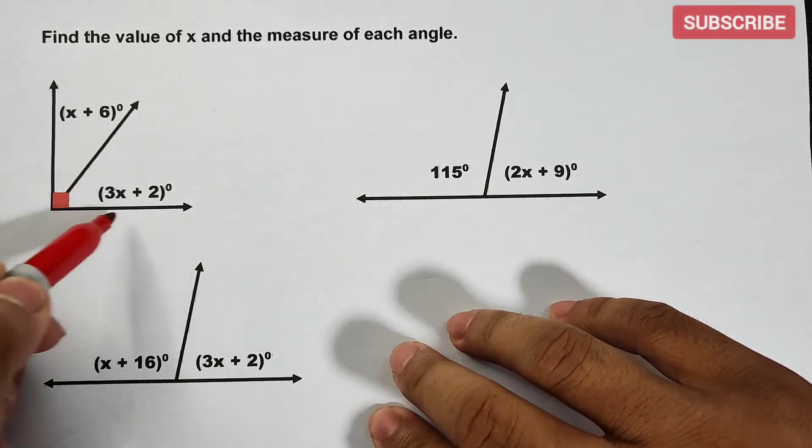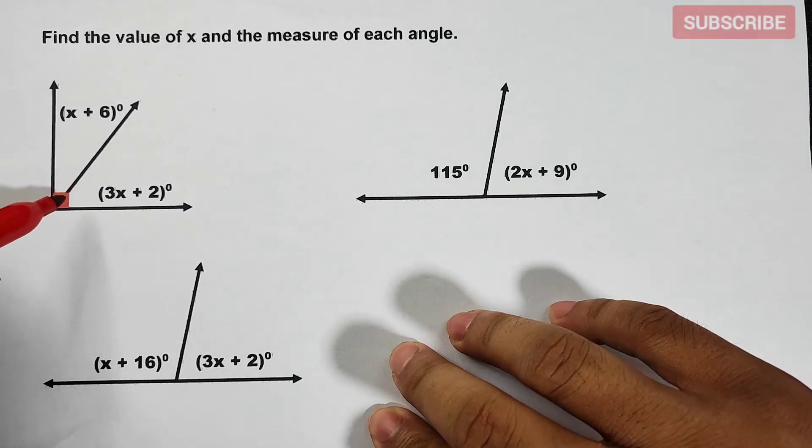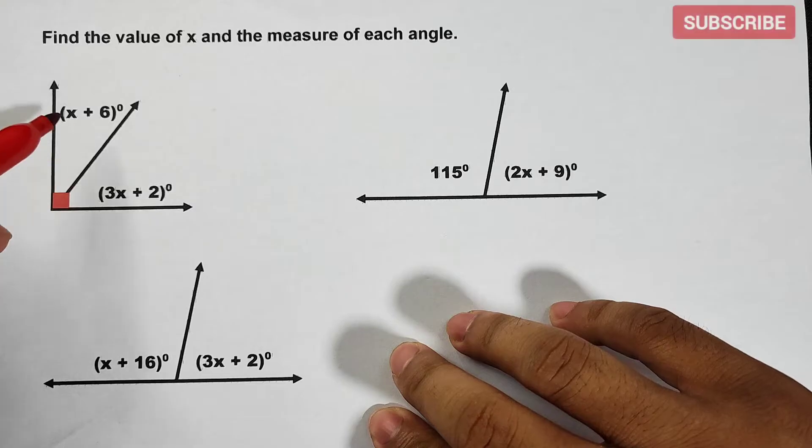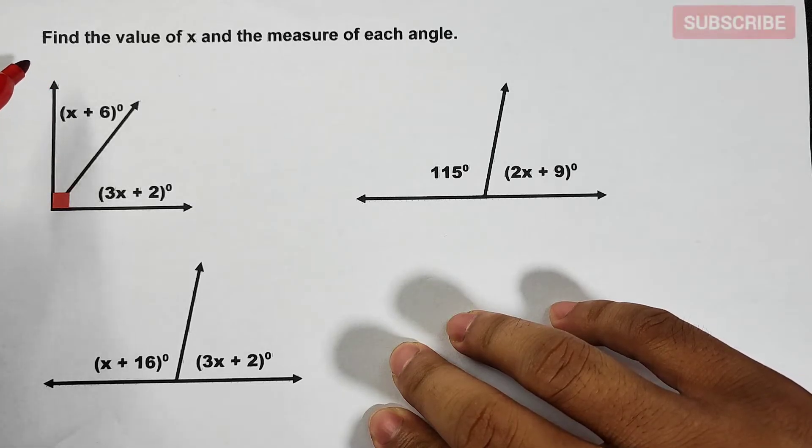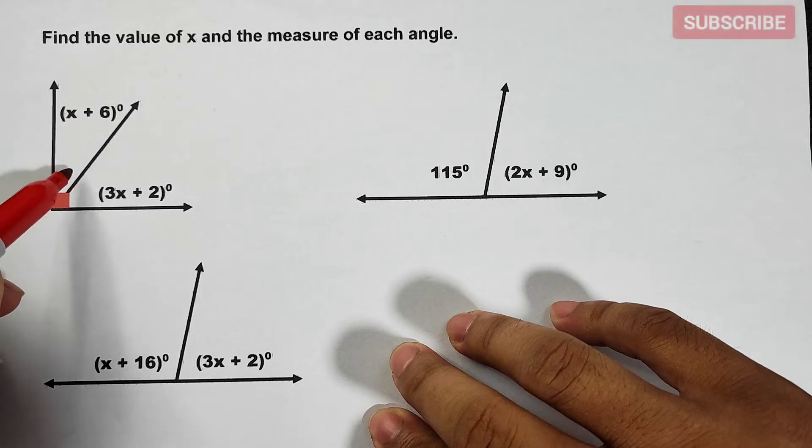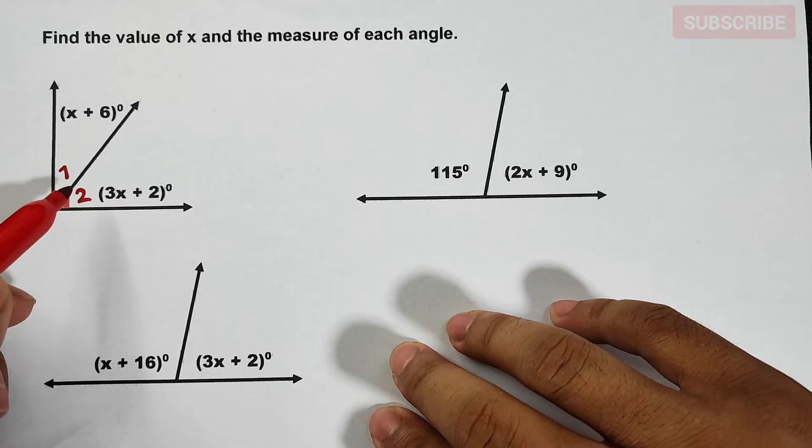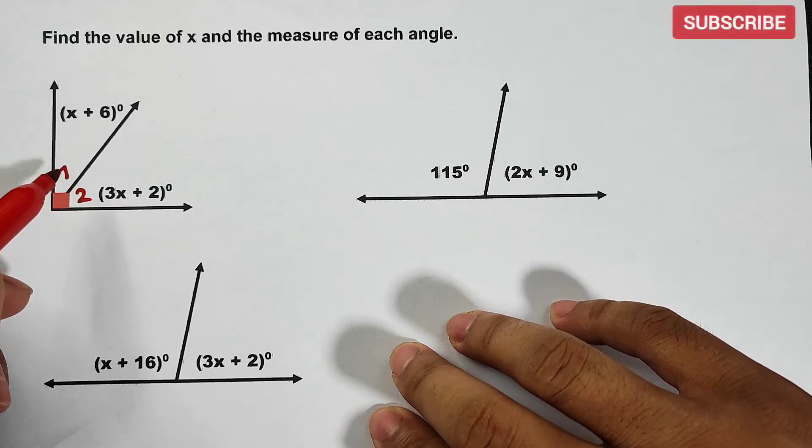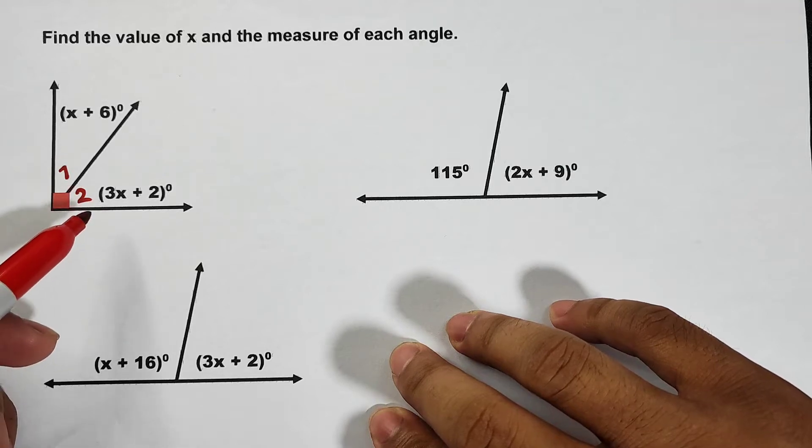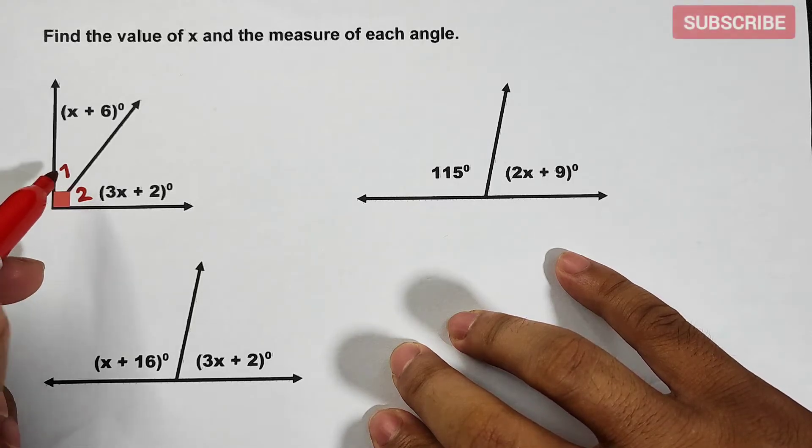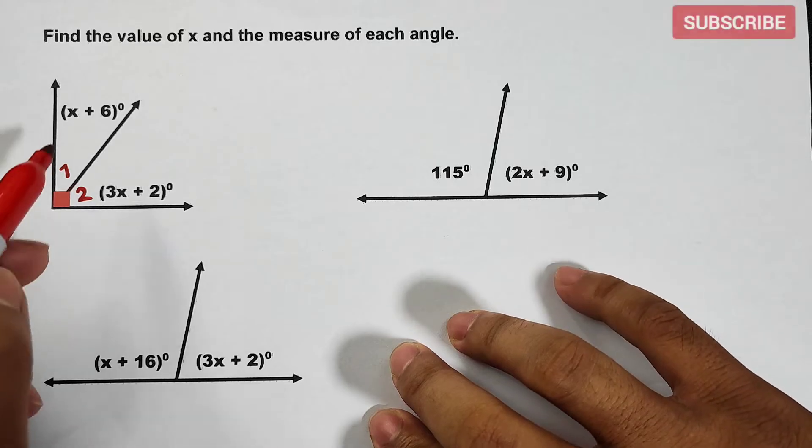As you can see, the whole angle or the bigger angle here is a 90 degree angle, meaning we can use the concept of complementary angles because angle 1 and angle 2 are forming complementary angles. So how are we going to solve this kind of problem? Since they are complementary, the concept is that if the two angles are complementary, meaning the sum of the two angles is equal to 90 degrees. So to solve this, let's create first an equation.